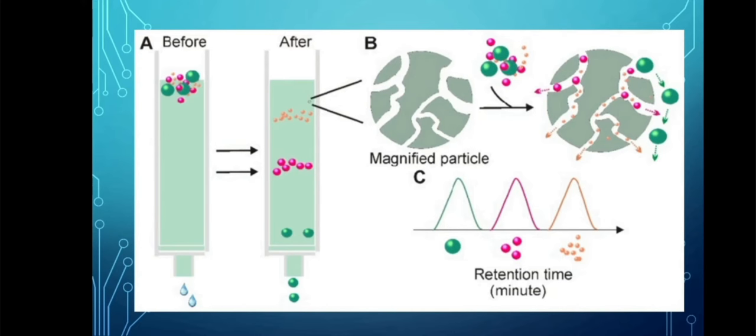Size exclusion chromatography separates molecules by differences in size as they pass through a resin packed in a column. The principle: particles of different sizes elute through a stationary phase at different rates. This results in separation of a solution of particles based on size. The gel consists of spherical beads containing pores of a specific size distribution. Separation occurs when molecules of different sizes are included or excluded from the pores within the matrix.